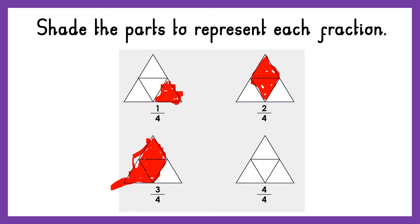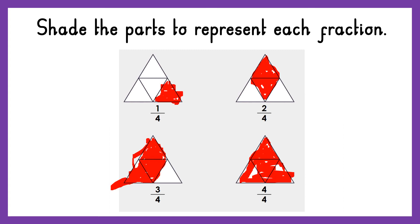And then the last fraction says four out of four parts are shaded. Remember, when the numerator and the denominator are the same, it means that we're talking about the whole thing, so the whole shape has to be shaded on the final one. And I hope your shading was neater than mine!